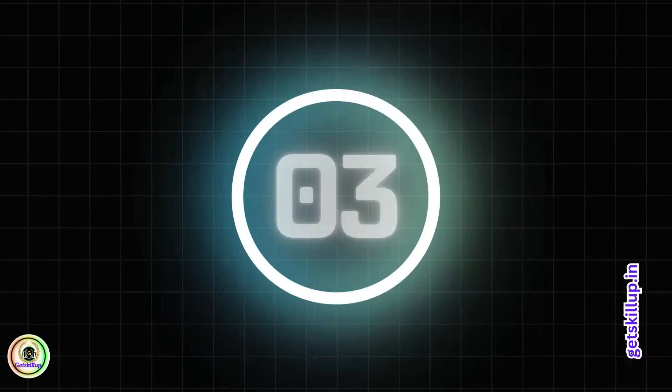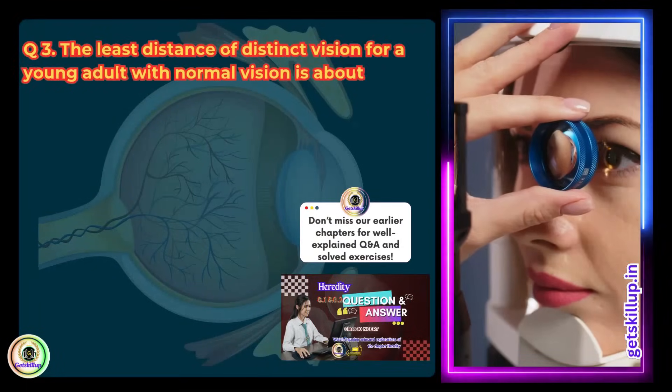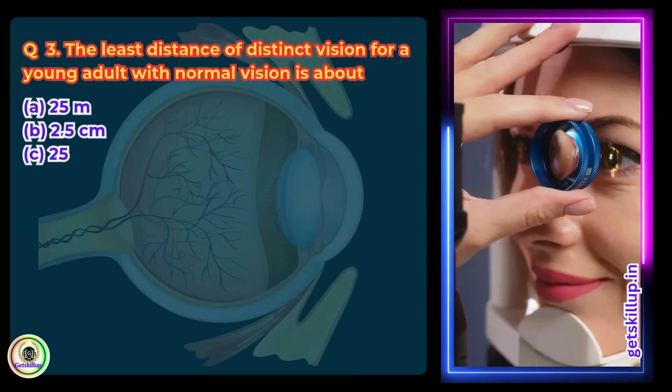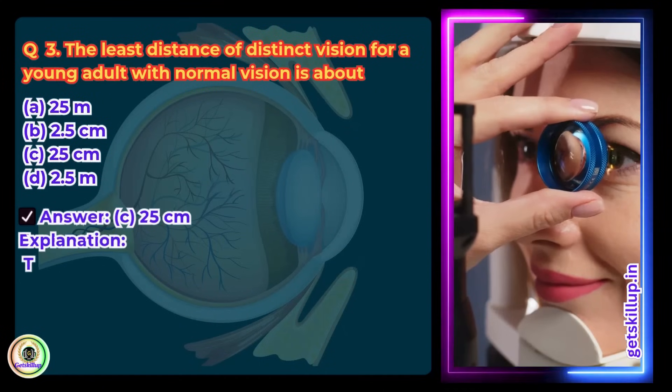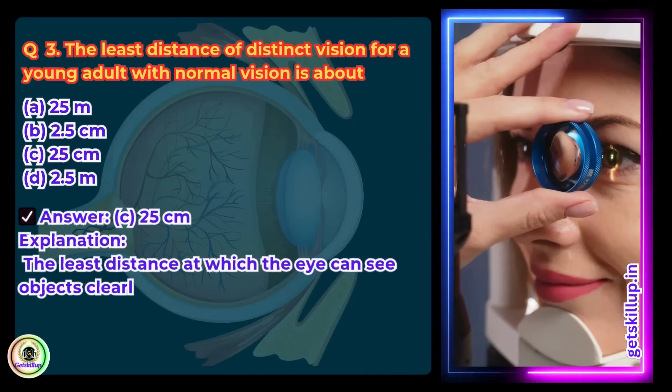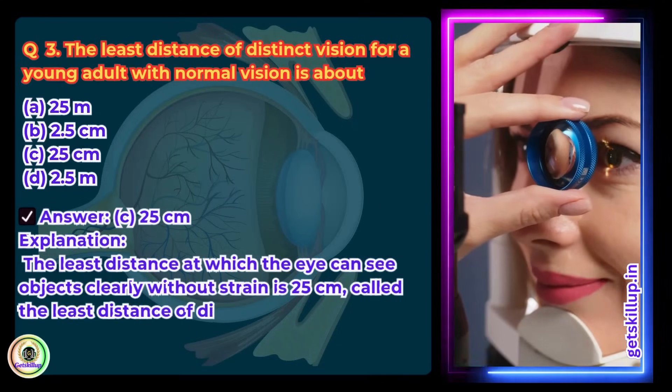Question 3. The least distance of distinct vision for a young adult with normal vision is about: A. 25 m, B. 2.5 cm, C. 25 cm, D. 2.5 m. Answer: C. 25 cm. Explanation: The least distance at which the eye can see objects clearly without strain is 25 cm, called the least distance of distinct vision.